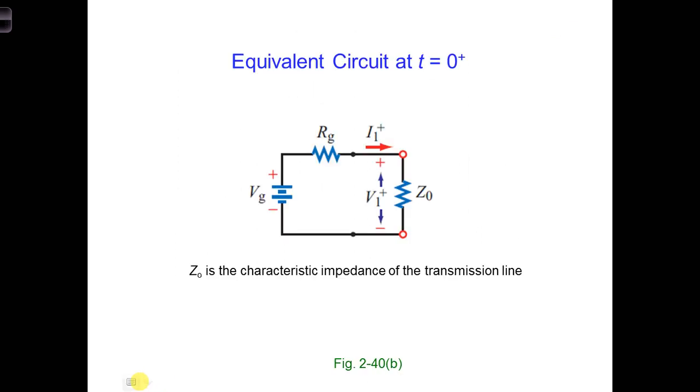The lossless transmission line has a real impedance of z-naught. So the battery sees z-naught at time t equals zero plus.